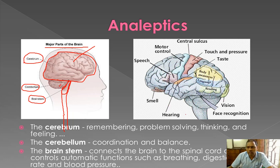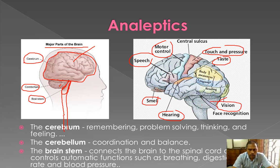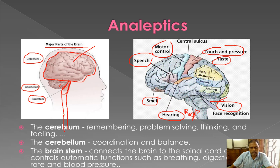The brain and all its parts have various centers — like the hearing center, smell center, speech center, motor control, touch and pressure, taste, and vision. The medulla oblongata contains the respiratory center, which controls respiration.